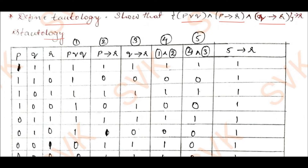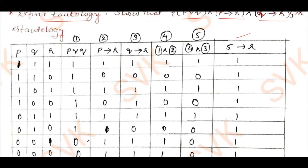Along with column 5, I will apply implication with r to get the last column, which will be a tautology. For column 1 (p disjunction q): wherever both truth values are 0 I put 0, all other cases are 1. For column 2 (p implies r): wherever p is true and r is false I put 0, otherwise 1. For column 3 (q implies r): wherever q is true and r is false I put false, other cases true.